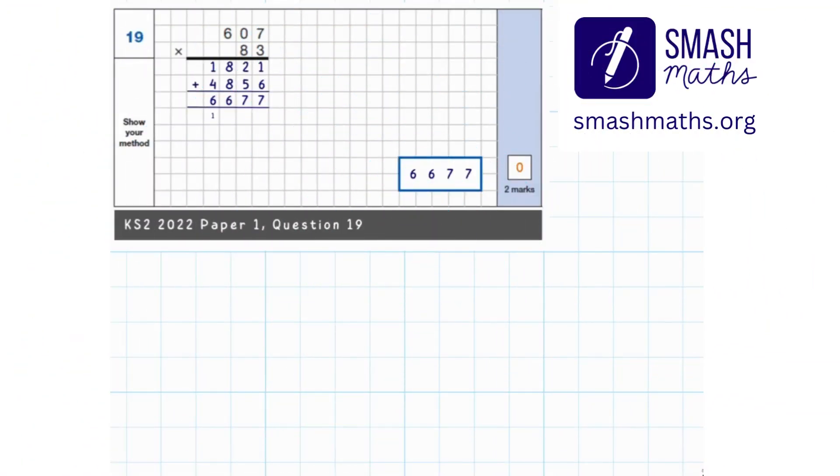Here is an arithmetic question. It's a three-digit number multiplied by a two-digit number, and it's been taken from a previous SATs paper. As you can see, it's been awarded zero marks - it's incorrect.